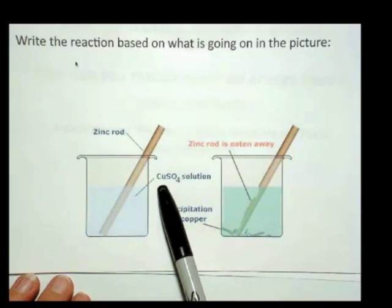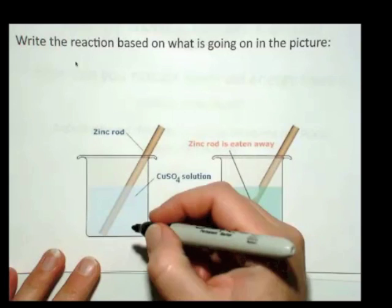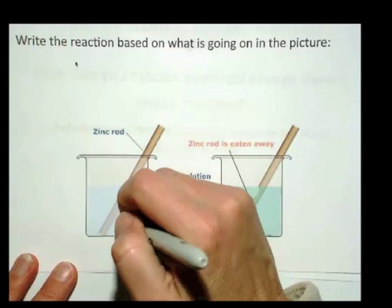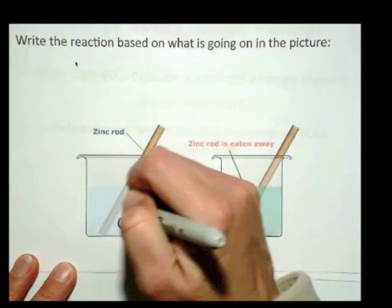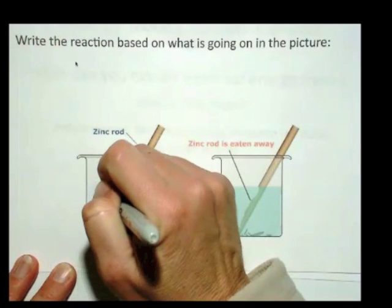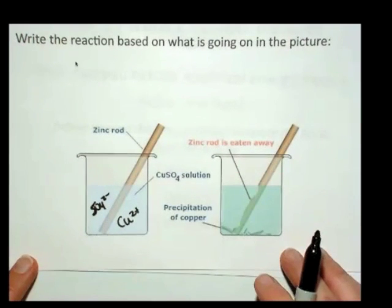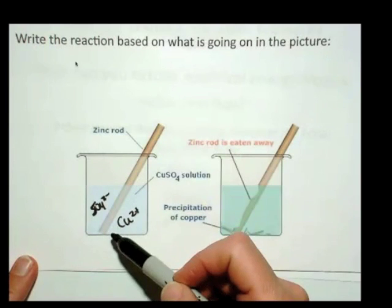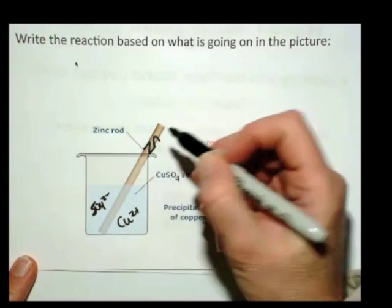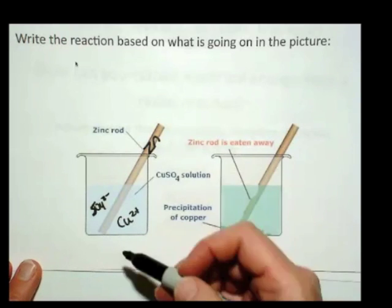If it's in solution, what's existing in the solution are copper ions and sulfate anions floating around, because it's aqueous. It's in solution. That means aqueous solution. And you stick into that solution a zinc rod. So this is the element zinc in this rod.